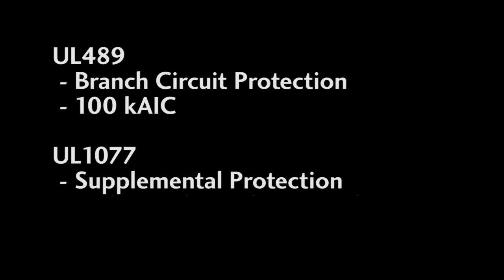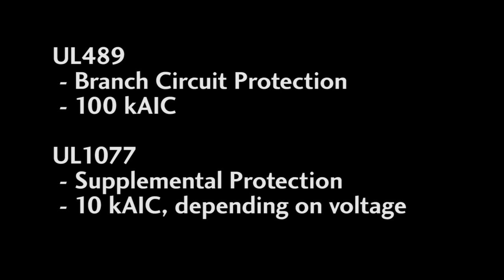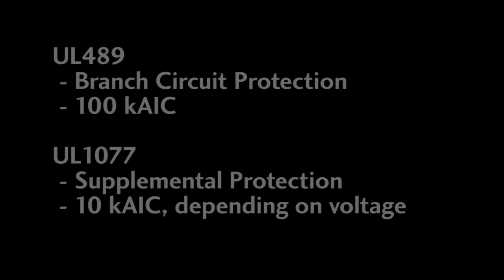The 1077 devices are strictly supplemental and should only be used where a branch circuit protection is already provided and you just want some extra protection or where protection is not required but you want to add some anyway. The 489 devices can handle up to 100,000 amps of interrupt capacity. The 1077 devices are in the tens of thousands of amp interrupt capacity depending upon what voltage you use them at.